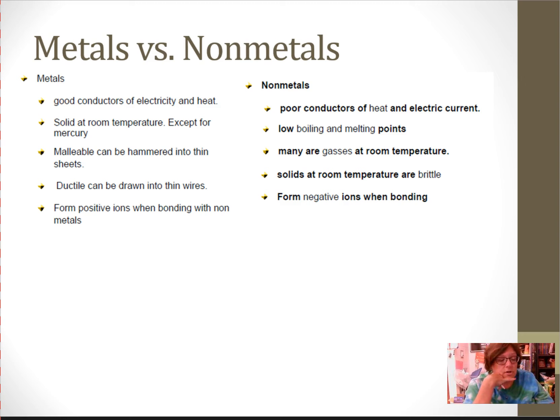Go on down to where it says metals. Metals are good conductors of electricity and heat. This is why you don't want to use a metal spoon if you're making mac and cheese, and you're going to leave the spoon in the pan because it will get hot. If you're going to leave a spoon in the pan, you want to use a wooden spoon. Metals are solid at room temperature except for mercury. Gallium will melt in your hand. Metals are malleable, which means they can be hammered into thin sheets. They are ductile, which means they can be drawn into thin wires. And they form positive ions, meaning they lose electrons when they bond.